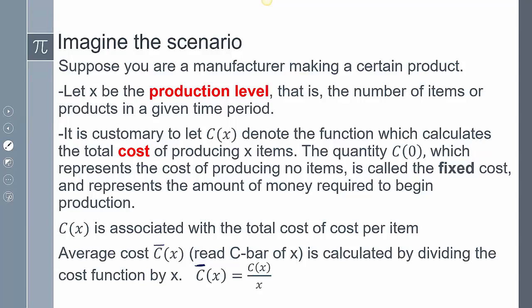Let's take a look at this scenario. If you're a manufacturer making a certain product, we're going to say x is the production level, which means the number of items being produced or products being created over a given period. We're going to let C(x) denote the cost of producing x items, and we're going to write that as a function. C(0), the cost of producing nothing, is going to be our fixed cost, which is the money required to begin production in the first place.